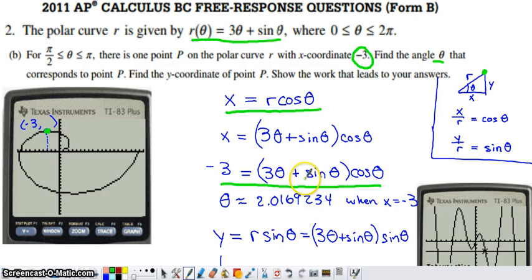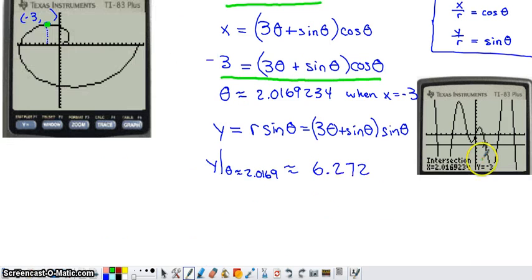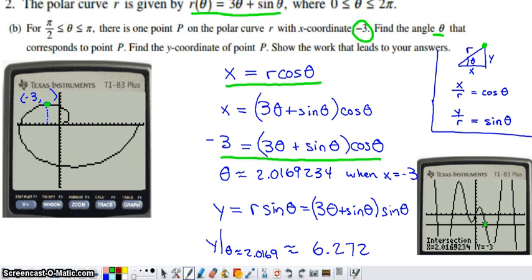I changed to function mode and graphed y = -3 and the other side of the equation. I found the intersection point and confirmed it was between π/2 ≈ 1.5 and π ≈ 3.14. The intersection gives θ ≈ 2.016734. Although it says x because I'm in function mode, that's really my value of θ.